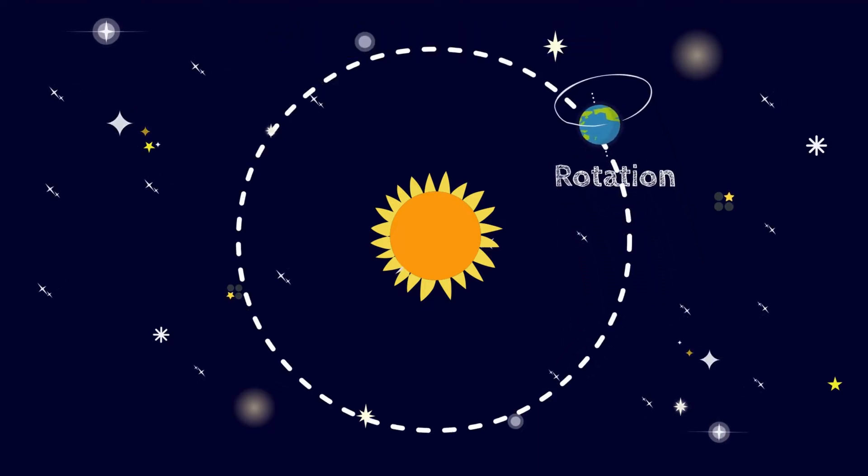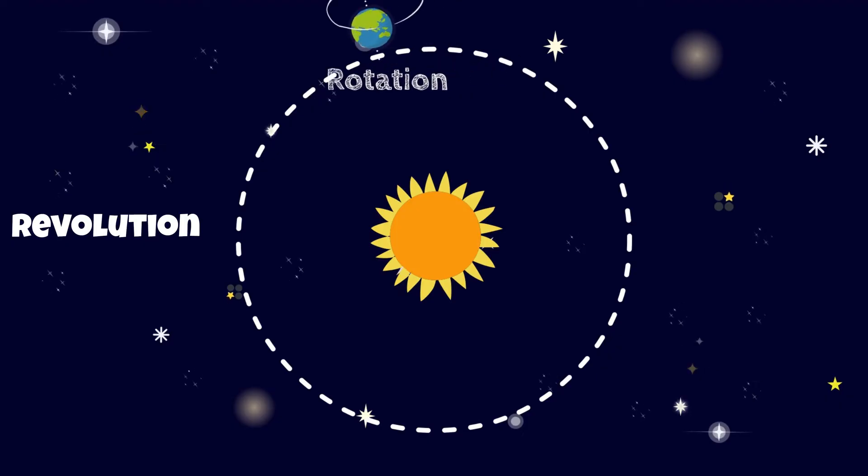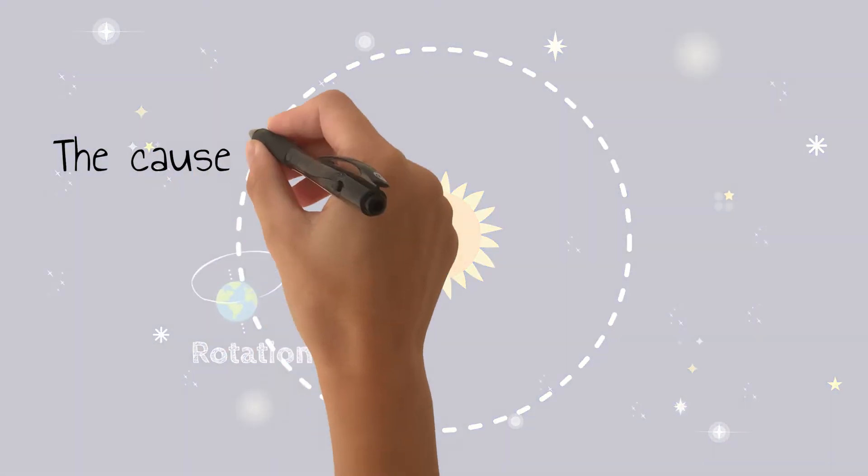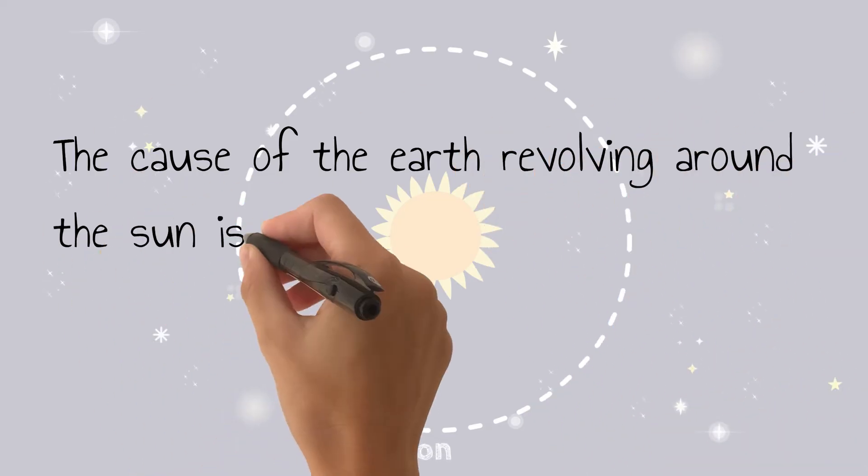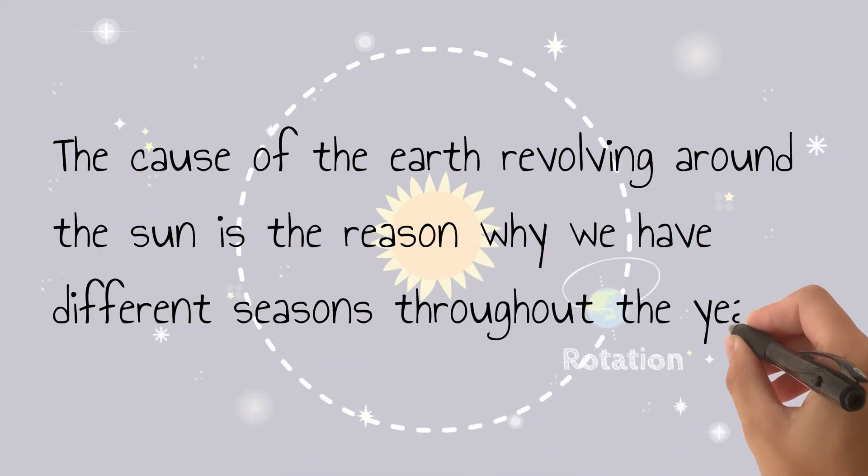The Earth is both revolving around the sun and rotating on its tilted axis at the same time. The cause of the Earth revolving around the sun is the reason why we have different seasons throughout the year.